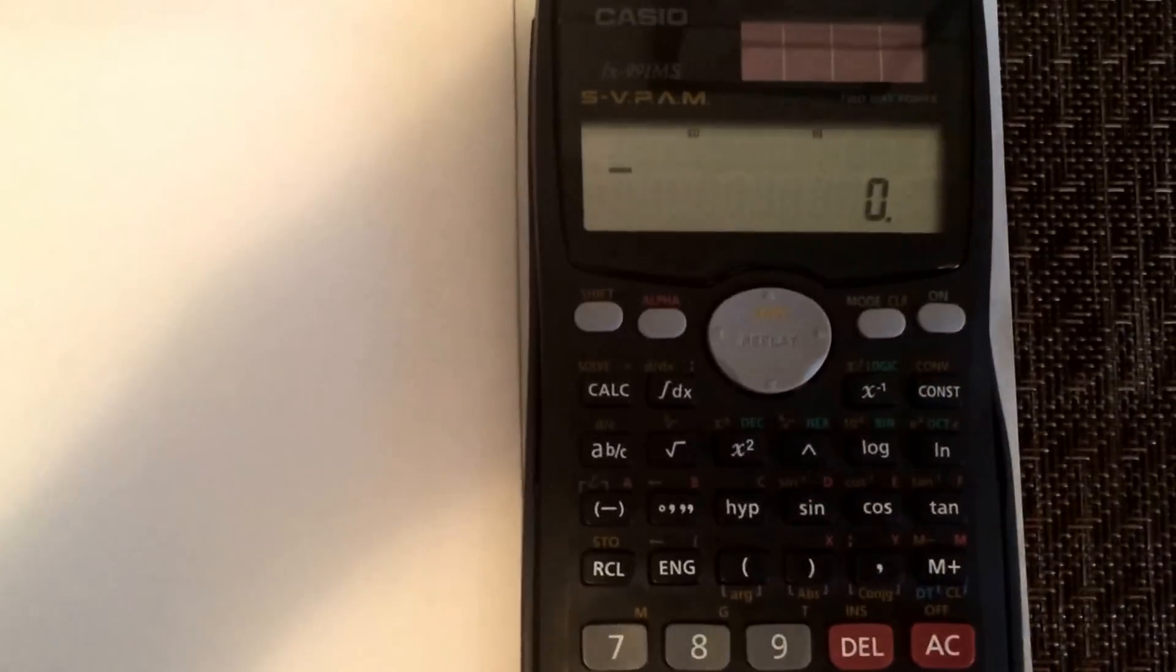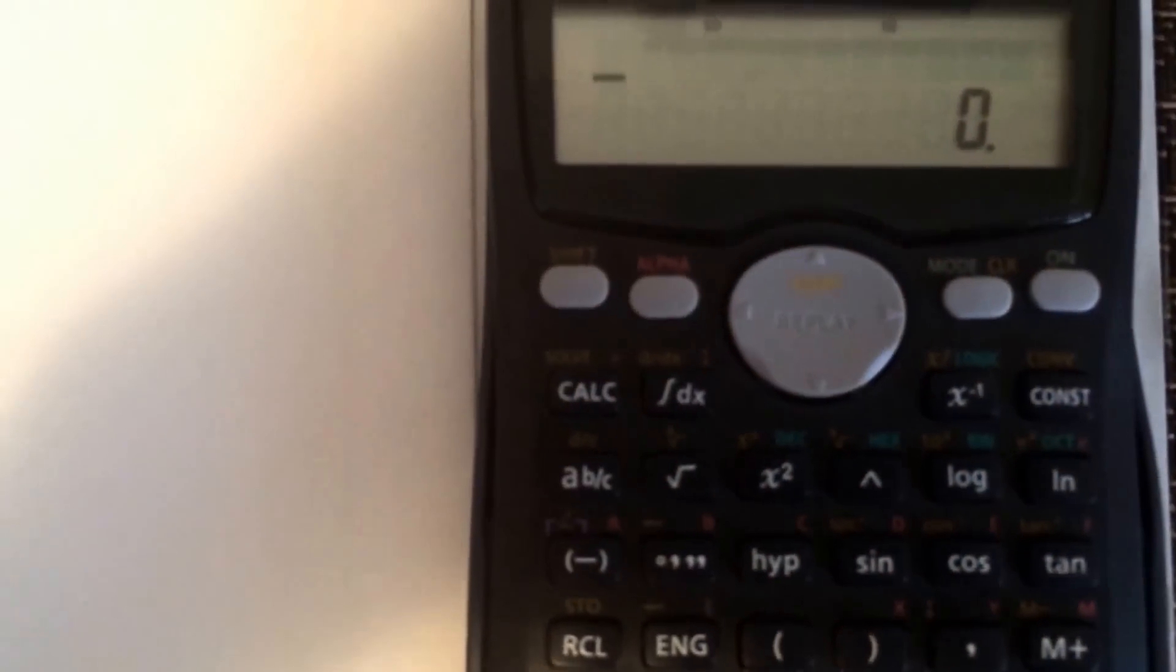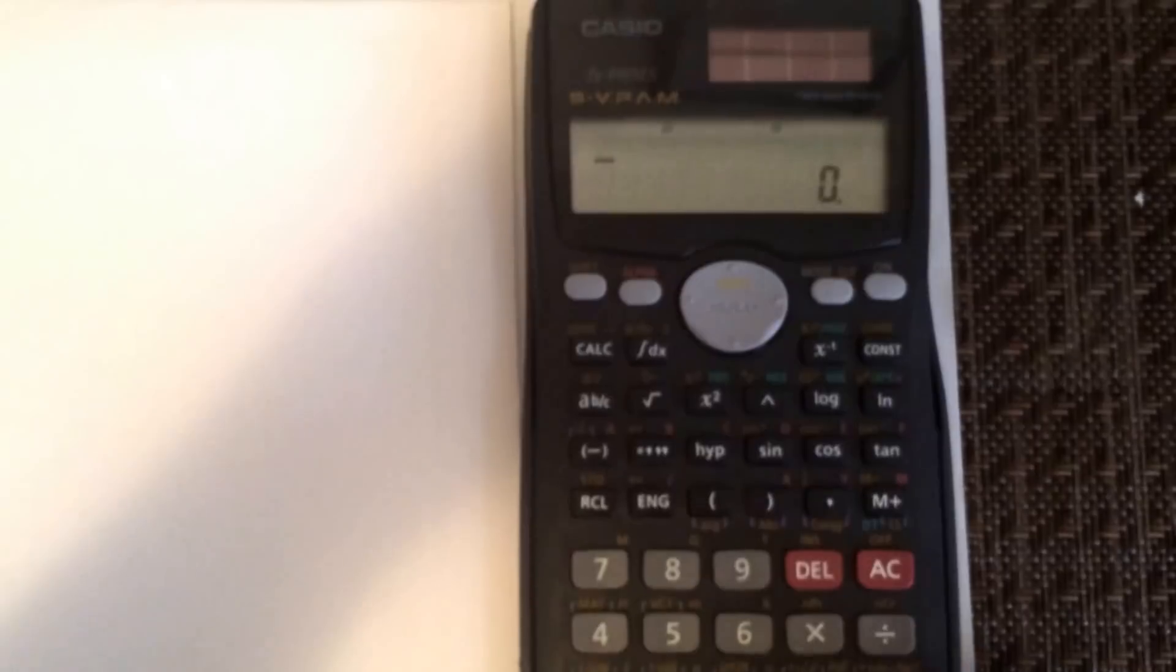The first thing we're going to do on our calculator is get into standard deviation mode. Select mode twice, which is right there, and then select one for standard deviation.